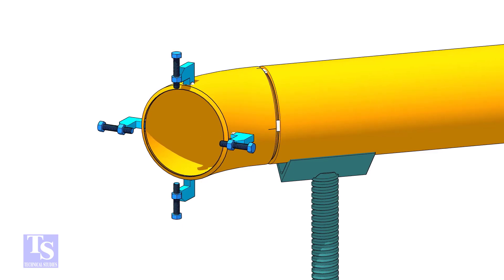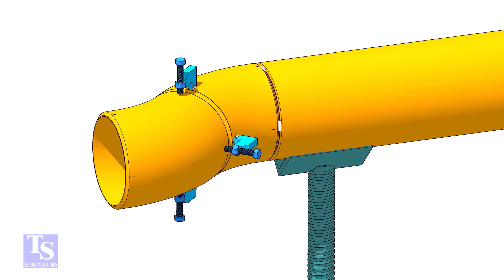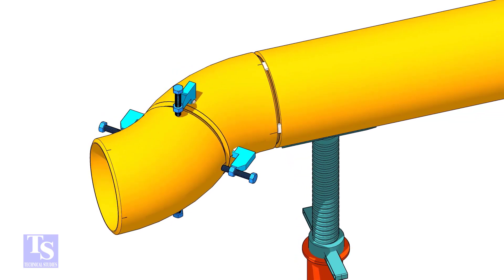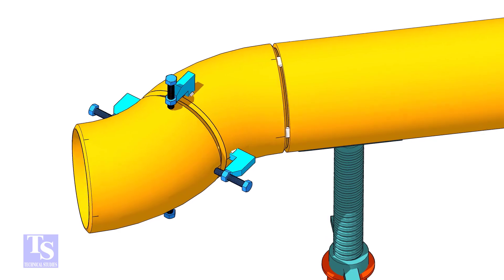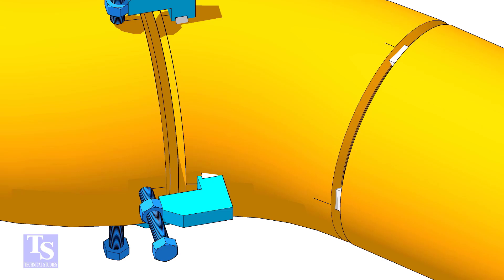Tack weld four jack bolts as shown. Put the other elbow in the jack bolts and match the center lines of both elbows. Put the gap rod between the elbows and maintain the required gap.